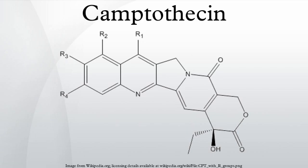Lurtotecan meets those requirements — it is a 10,11-ethylenedioxy analogue with a 4-methylpiperazinomethylene group at position 7 and has shown great potency in clinical research. A ring can also be formed between positions 7 and 9, similar to positions 10 and 11, giving new opportunities to make water-soluble derivatives. These hexacyclic CPT analogues become more active when electron-withdrawing groups are placed at position 11 and methyl or amino groups at position 10. Exatecan is an example of a hexacyclic CPT with a six-membered ring over positions 7 and 9, and is 10-methyl, 11-fluoro substituted. It is water-soluble and more potent than topotecan.